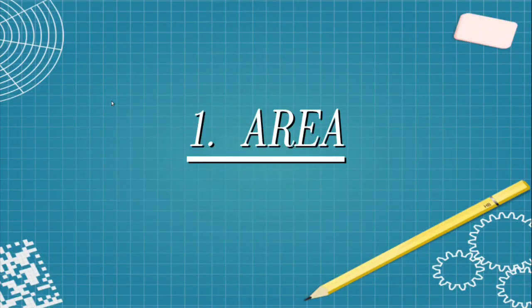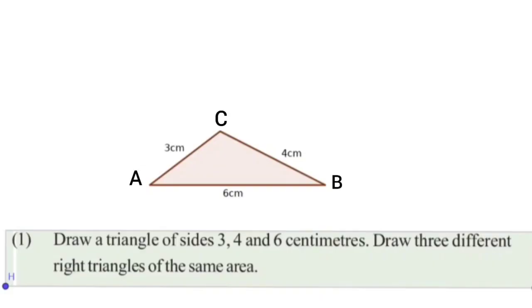Welcome to 9th standard maths class. This is the second part. Let us discuss the first exercise. First question: Draw a triangle of sides 3, 4, and 6 cm. Draw 3 different right triangles of the same area.